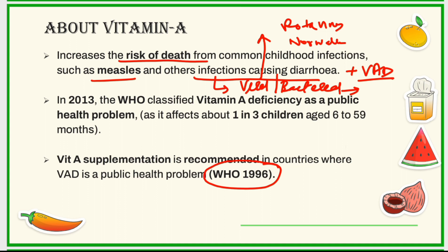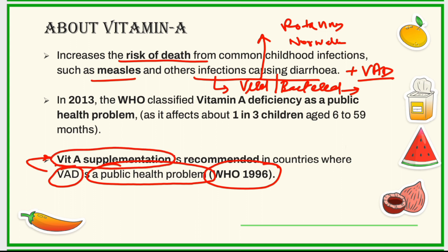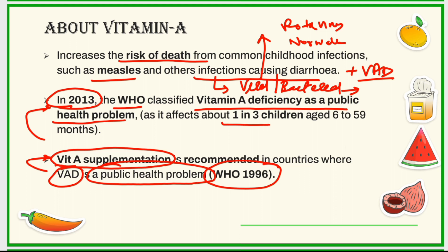In the year 1996, WHO recommended that in places declared as a public health problem — locations where vitamin A deficiency has been declared a public health problem — we need to provide vitamin A supplementation to children. Following that, in the year 2013, WHO classified vitamin A deficiency as a public health problem because it was found that about one in three children in the age group of 6 to 59 months was having vitamin A deficiency.